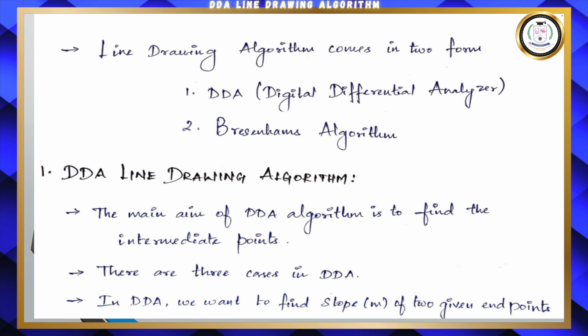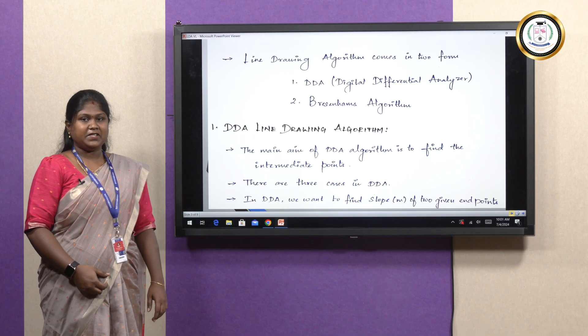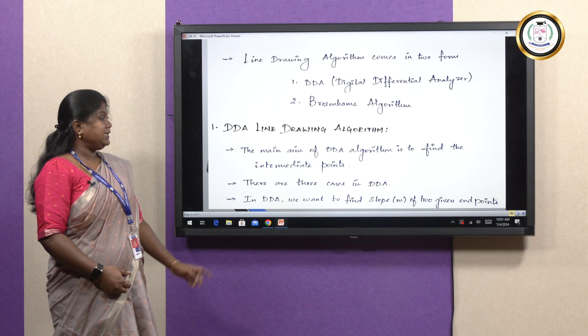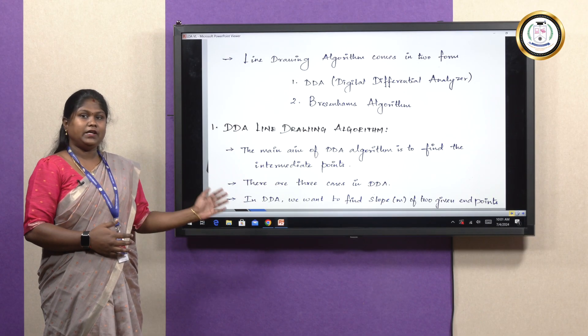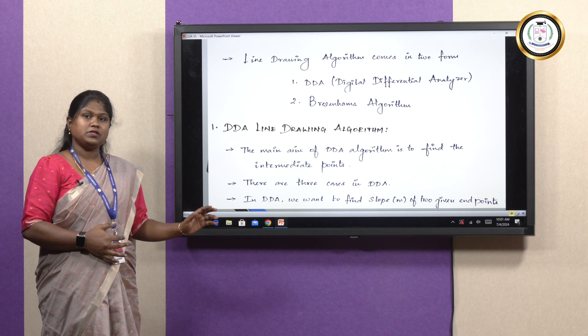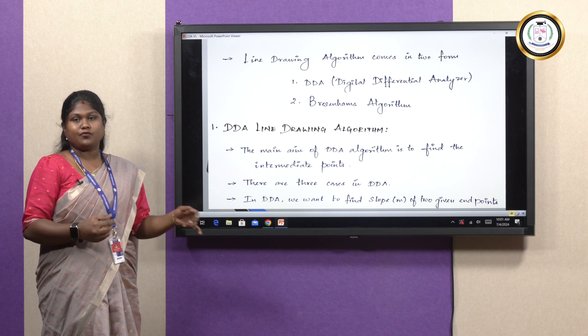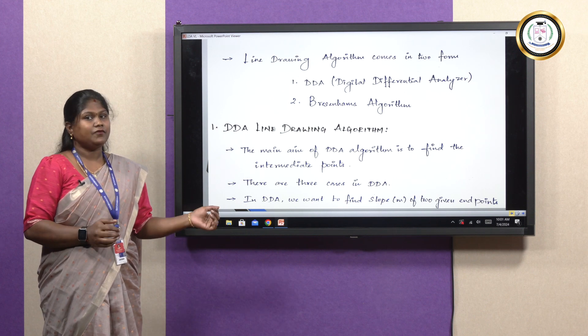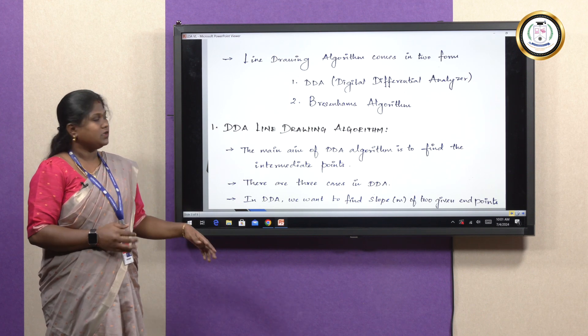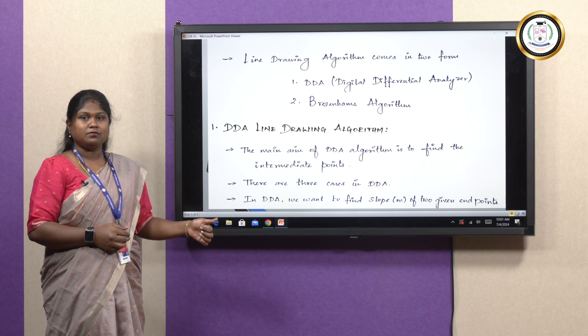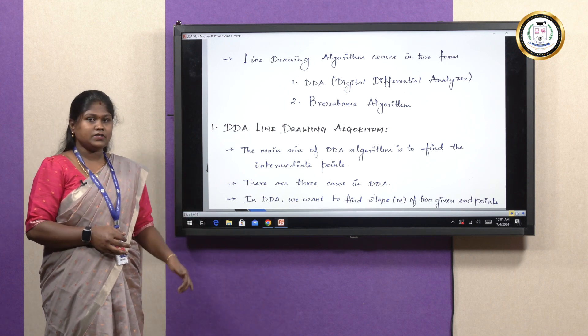Line drawing algorithms come in two forms. One is DDA — Digital Differential Analyzer — and the other one is Bresenham's algorithm. In this session, we will be dealing with the DDA line drawing algorithm. The main aim of the DDA algorithm is to help us find the intermediate points when we are provided with two end points. This DDA line drawing algorithm has three cases.